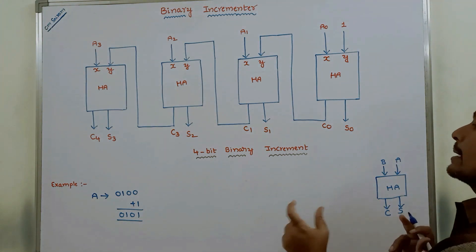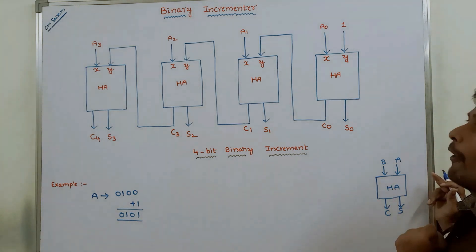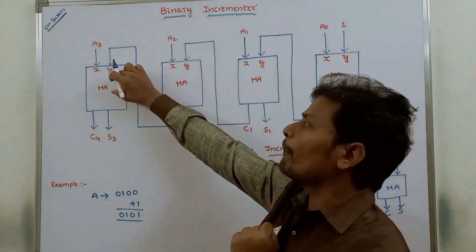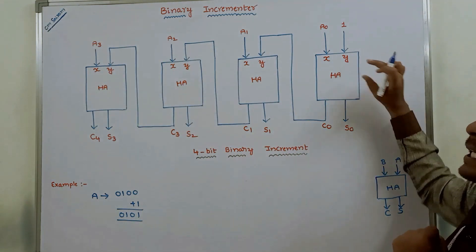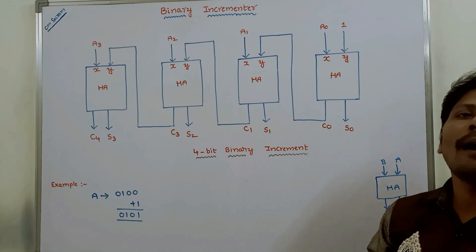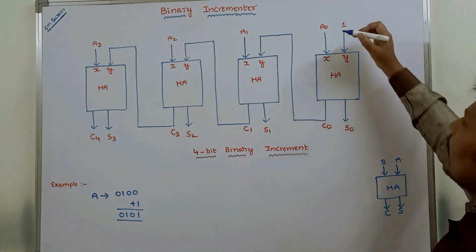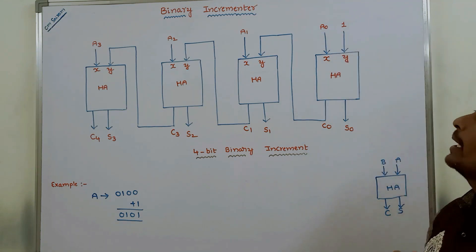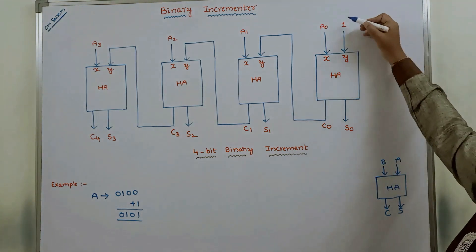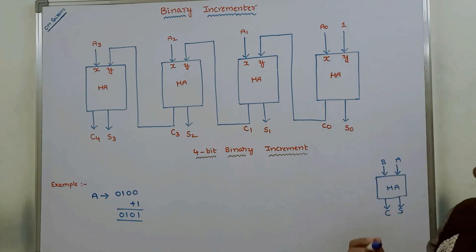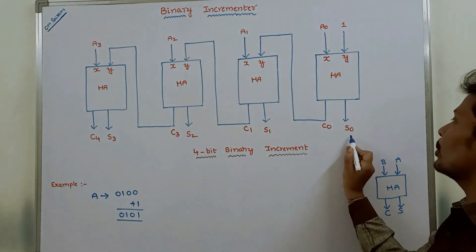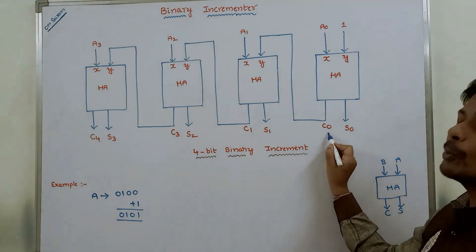Now, how this binary incrementer operation can be performed. This is the least significant half adder and this is the most significant half adder. For the least significant half adder, logic one can be applied as one input and A0 can be applied at the X input of the least significant half adder, and logic one at the Y input. It can produce two outputs: S0 and C0.